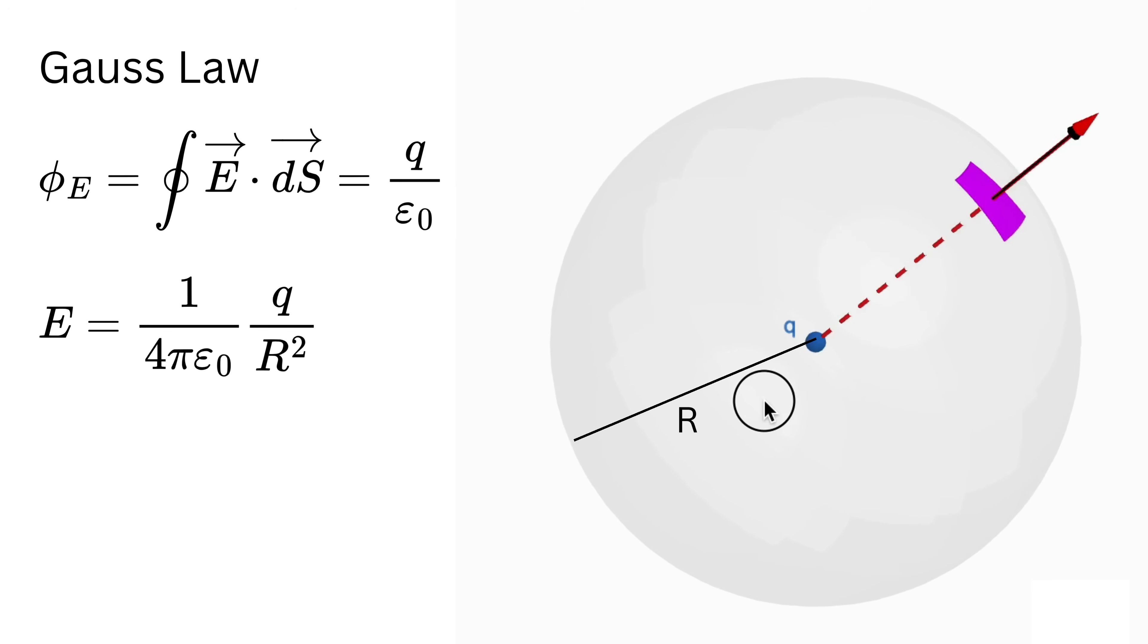Since the field strength and direction are the same everywhere on the surface, the flux through one small patch is E multiplied by dS. To find the total flux, we add up the contributions from all patches over the whole sphere. Now this E is constant for a given radius r, right? So we can take it out of this integral, and we are left with integral of dS, which is nothing but the surface area of the entire sphere. The total area of the sphere is 4 pi r squared, so total flux equals E multiplied by 4 pi r squared.